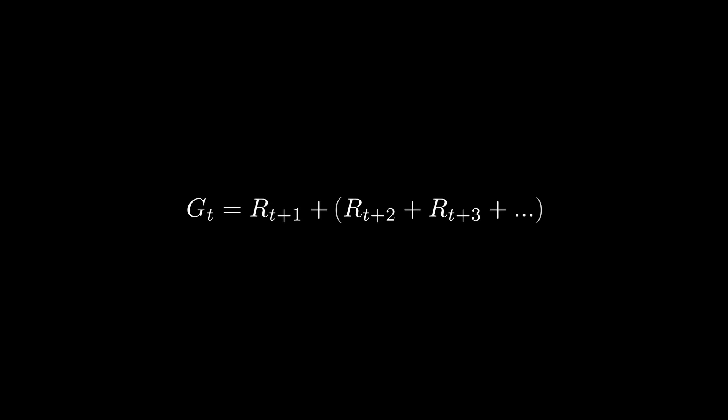The rewards are collected sequentially and g is called the return. We can group the future rewards like this thanks to algebra, but we notice that the reward in the future is the same as the future return. So we need to predict the future return.